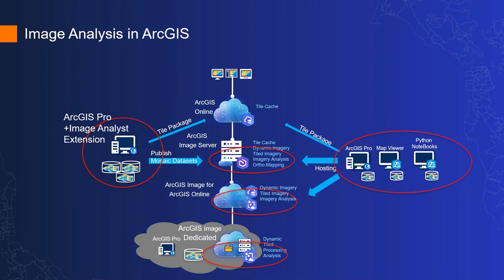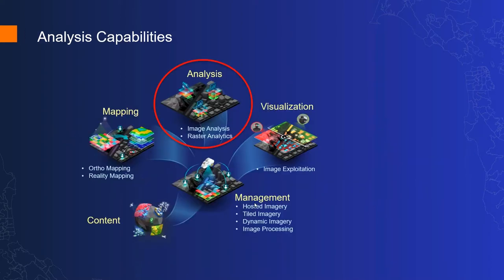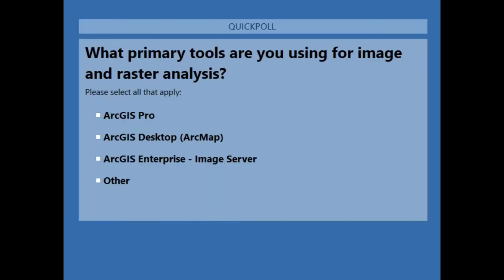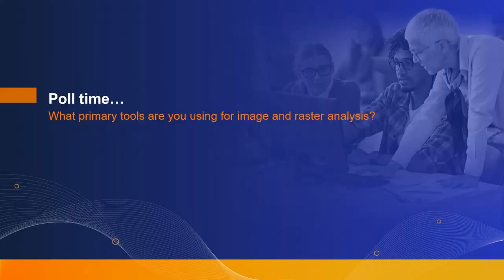That's exciting to see how much development has gone into the ArcGIS Image product suite and the deployment options available, giving more flexibility for teaching and research and treating it as a connected system. Before the next topic, we'd like to do another poll question: what primary tools are you using for image and raster analysis at the moment? Some of you may be using ArcGIS Pro, ArcMap, Enterprise Image Server, or others. Thank you — let's have Vinay take over to explore the latest analysis tools.